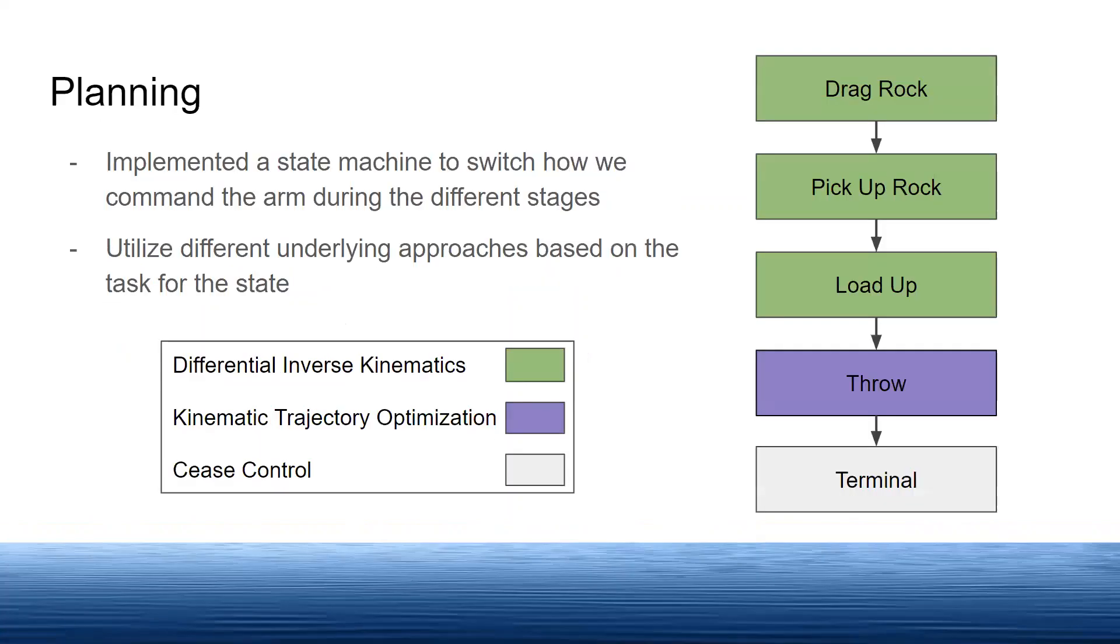Our setup consists of a state machine to switch how we command the arm. For each of these states, we have a different underlying control method as shown.